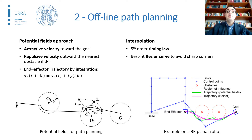A path smoothing process is applied in order to eliminate sharp corners. This procedure is based on a closed-form best fit using Bézier curves, as you can see in the picture on the right, where the green original trajectory is transformed into the pink one.